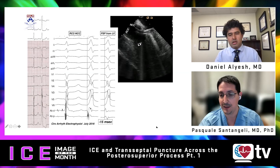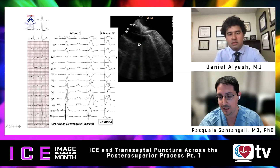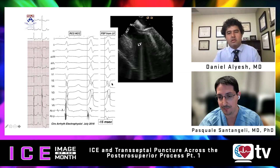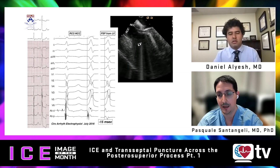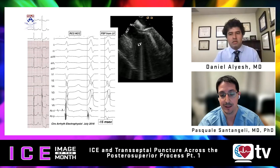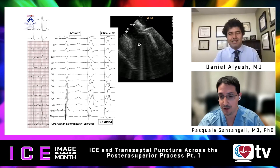The posterior superior process is the area of the left ventricle in direct contact with the right atrium. This happens in humans because the plane of the tricuspid valve is more apically displaced compared to the plane of the mitral valve, which leaves a portion of the septal basal aspect of the left ventricle in direct contact with the right atrium.